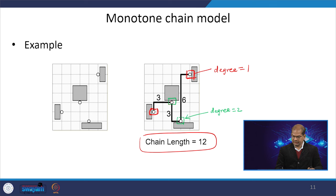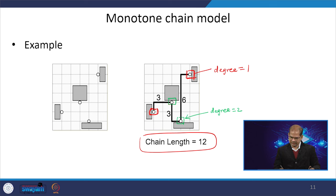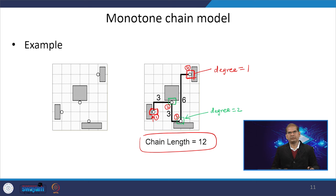In the example, pins are sorted according to the x coordinate — the pin with the minimum x coordinate is first, then the second, third, and fourth. The chain length is found to be 12. A similar approach can also be done by sorting on the y coordinate.